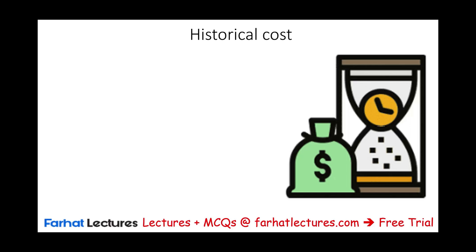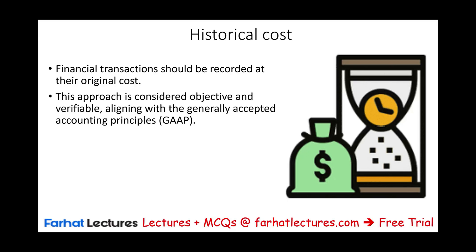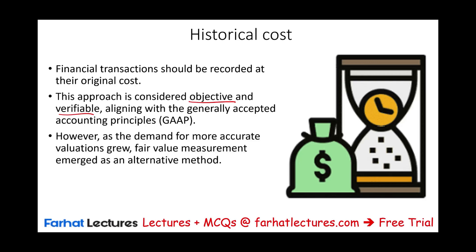Historical cost is one extreme. Traditionally, historical cost is what we used, and when you took financial accounting, it's the first principle you learn — when you purchase something, it's based on historical cost. Why? Because the number is objective and verifiable; we can see exactly how much we paid. However, as demand for more accurate, relevant valuation increased, we looked for an alternative — that's fair value.